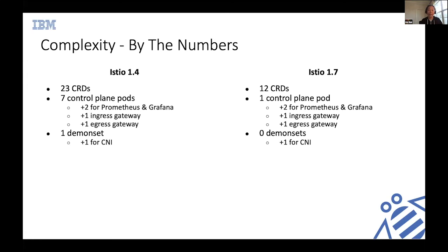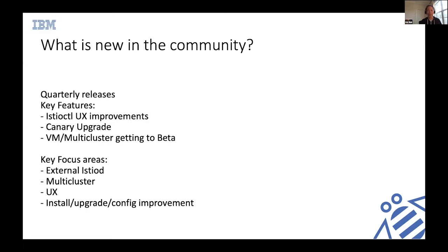We used to have one daemon set — which is why pod security policies were such a complexity. Now we're down to zero daemon sets for the node agent. We still have one daemon set for the CNI, which is an optional component if you don't want to give net admin privileges to whoever deploys microservices that want sidecar proxy injection — CNI handles that at the node level. Tremendous complexity improvement. I want to quickly talk about what's new in the community and how these new things relate to the Istiod journey we just went through.